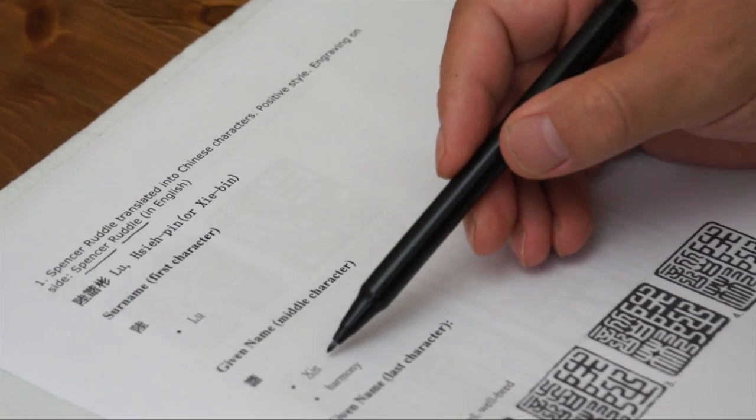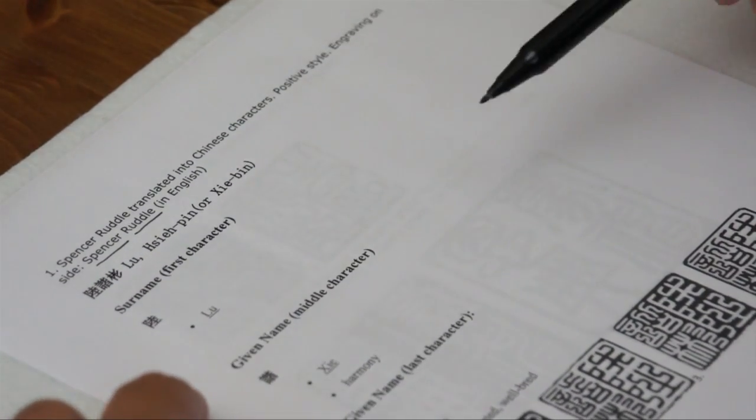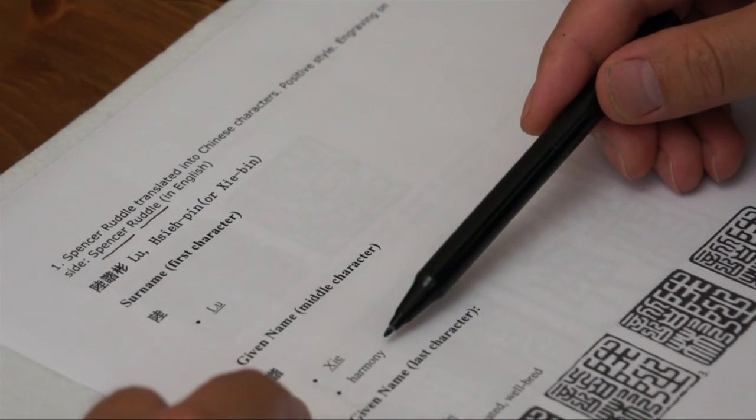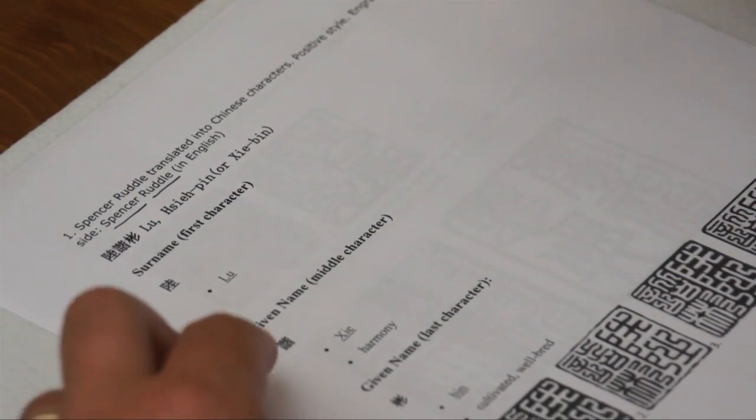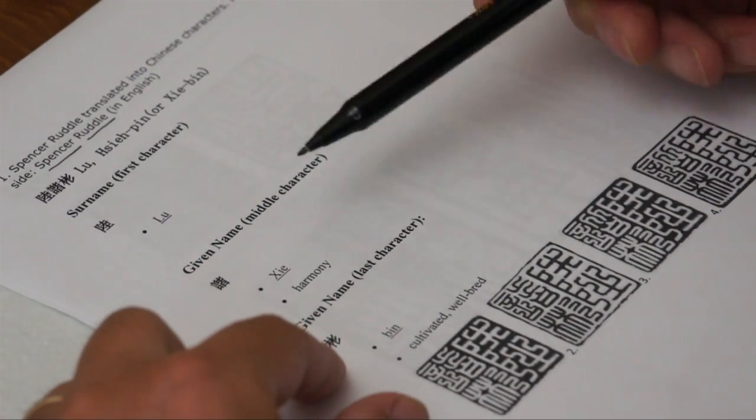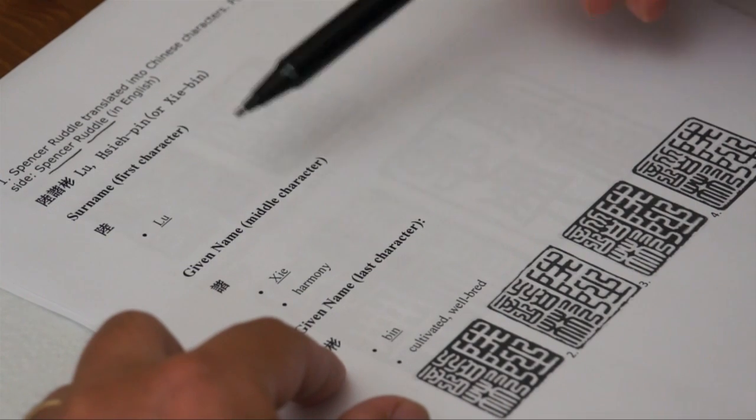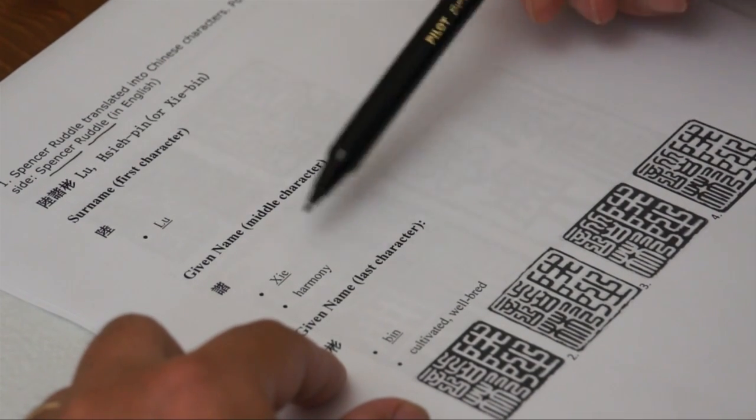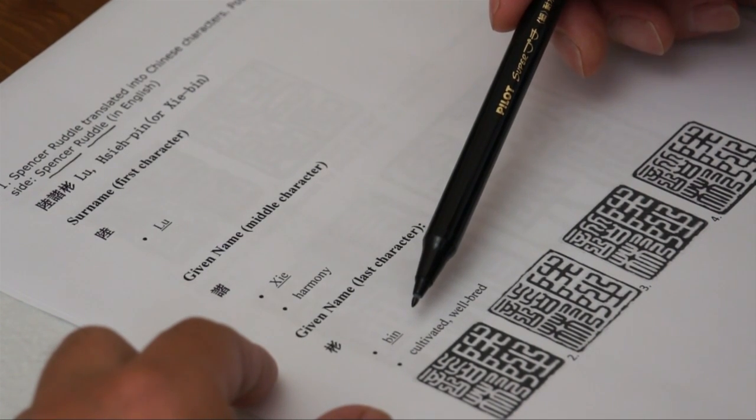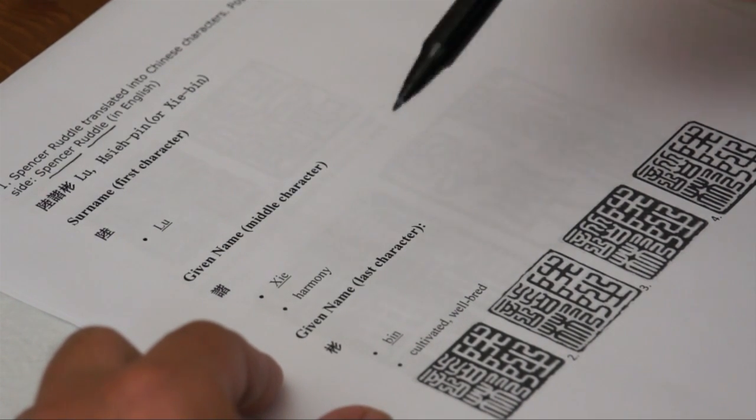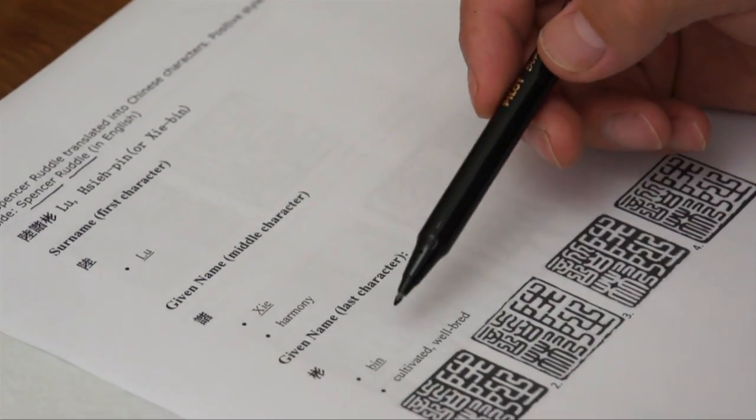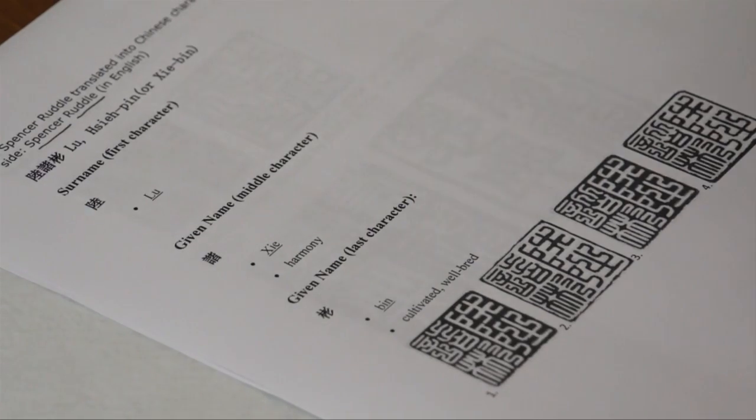And this one derived from S, Xie. The meaning is harmony. You can combine with another character derived from Spencer. So Bing, Xie Bing, that's where I think the website suggests.